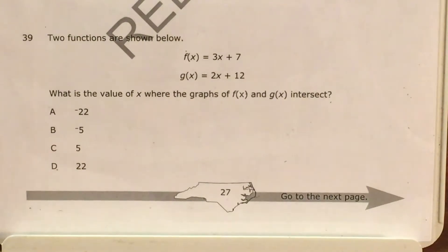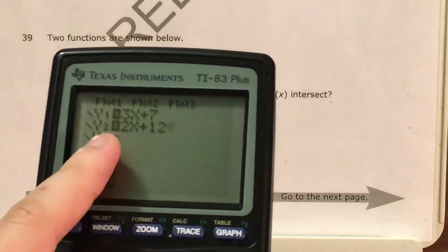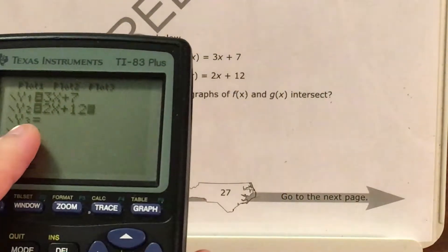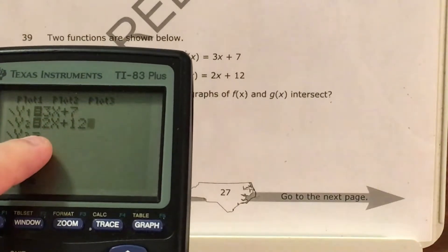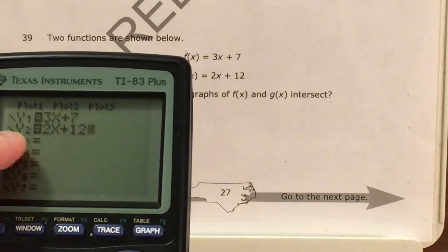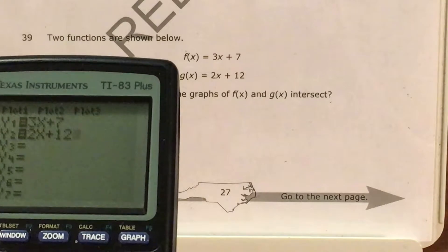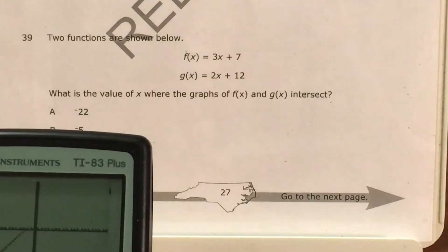I'm going to go over both methods here. To start with, for the calculator method, I press my y equals button to get to this screen. I have gone ahead and typed my f of x function into y1 and my g of x function into y2. So I now have 3x plus 7 and 2x plus 12 right there. And I'm going to press graph here.